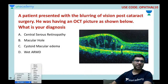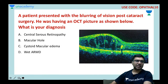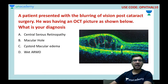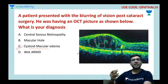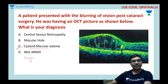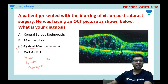A patient presents with blurring of vision post-cataract surgery with the following OCT. You can see cystoid spaces at the center of the macula. These are called cystoid macular edema. Post-cataract surgery, this is called Irvine-Gass syndrome. It can also be seen with drug toxicity — nicotinic acid, niacin, epinephrine, anti-cancer drugs like tamoxifen, and PG analogues. You can remember the mnemonic NEAT PG for the drugs causing cystoid macular edema.